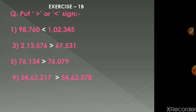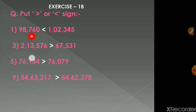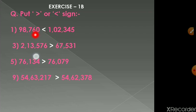Now exercise 1b: we have to compare numbers and put a greater than or less than sign. The first question is 98760 versus 1 lakh 2345. The first number is a five-digit number and the second is a six-digit number, so clearly the second number is greater.